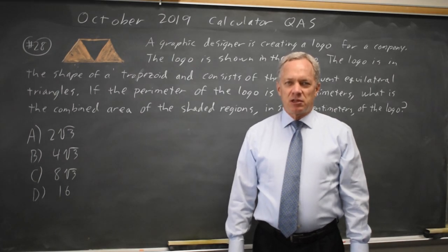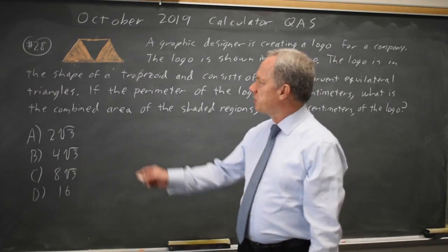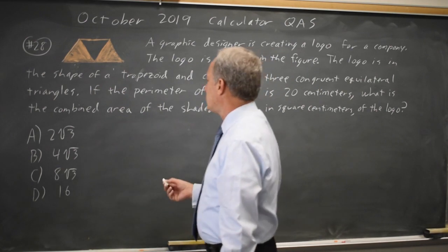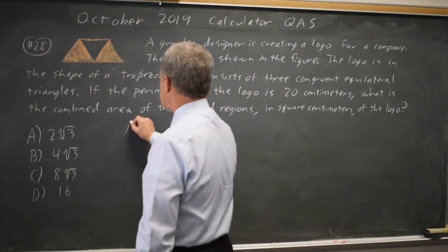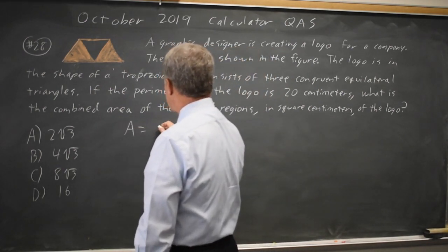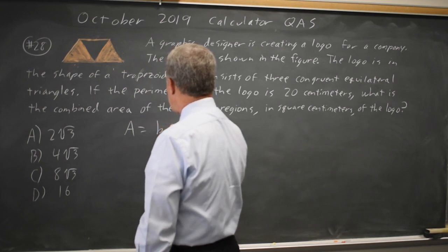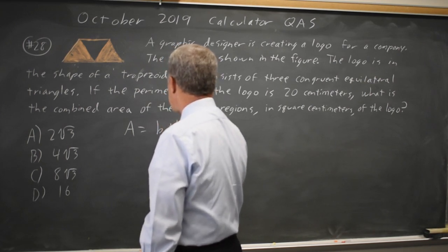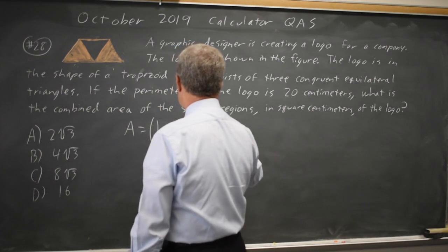This is question 28. The College Board is asking for the area of the shaded region in this trapezoid.